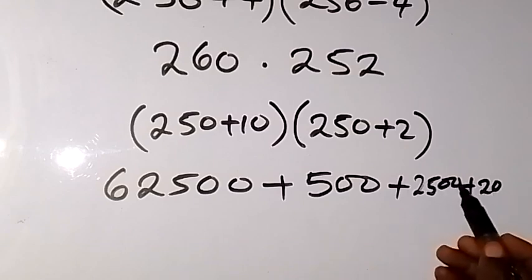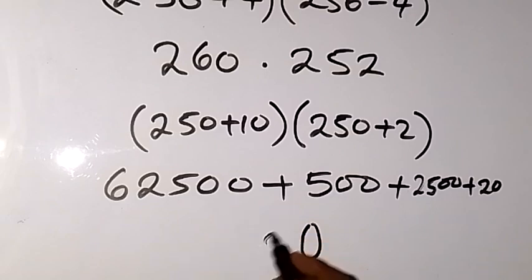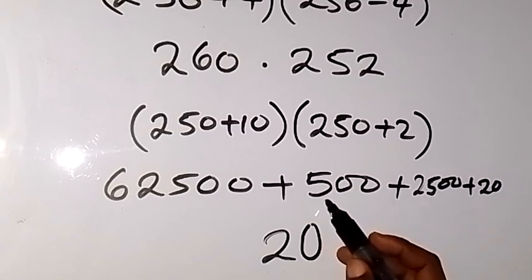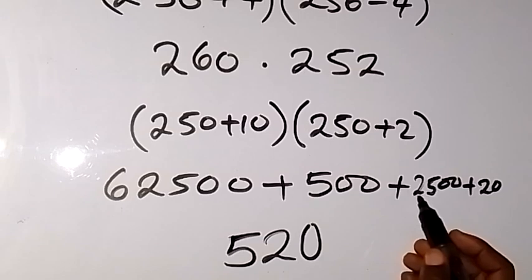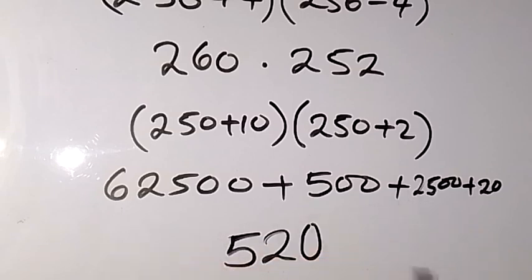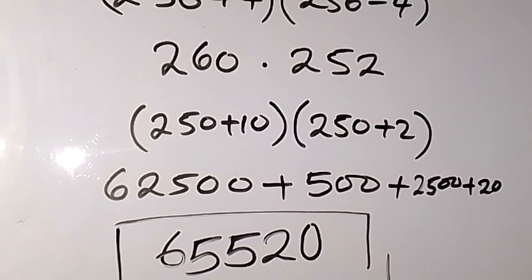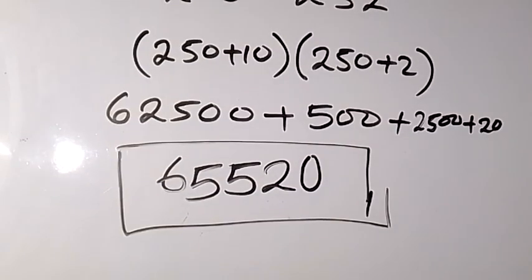Adding column by column: the units digit gives 0; the tens digit gives 2; the hundreds digit has 5 plus 5 giving 10, carry 1; then 2 plus 2 plus 1 carried gives 5; and the leading digit is 6. Therefore the answer is 65,520. Thank you for watching — don't forget to subscribe to my channel and turn the notification bell on. See you in the next class, bye for now.